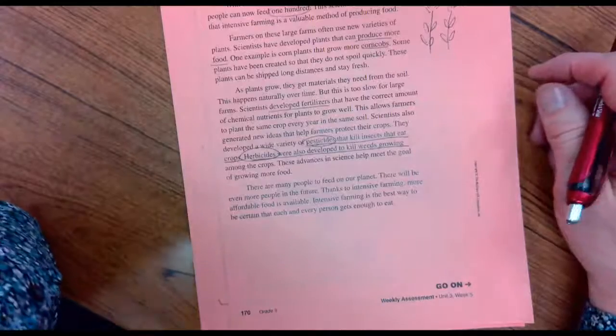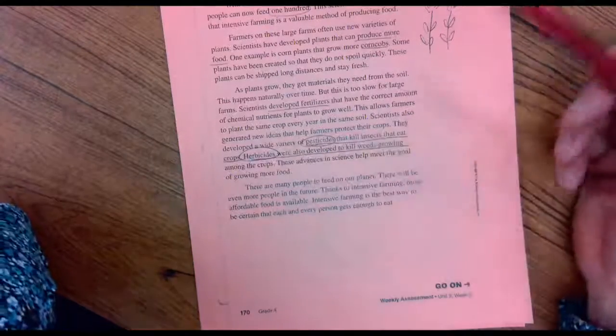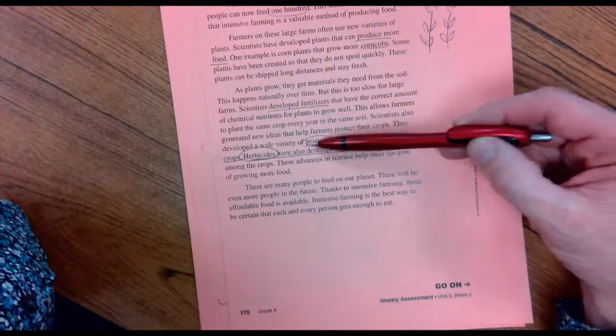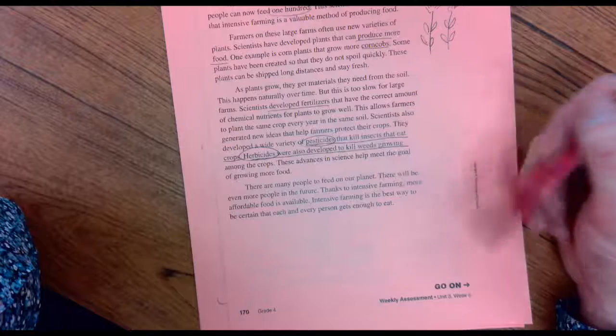Now if you knew your Greek and Latin roots, you know that herb means plant and pest means insect. And so a pesticide kills the insects and a herbicide kills the plants or the weeds.